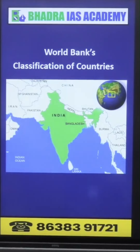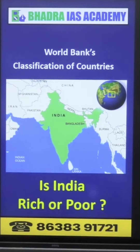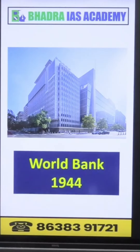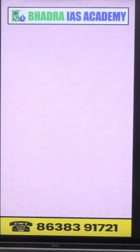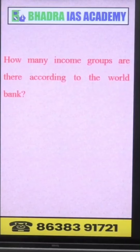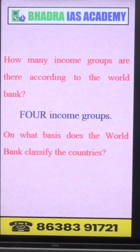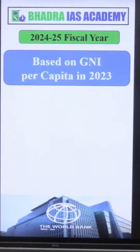So the World Bank classifies the countries into many groups — is India rich or poor? The World Bank, which was established in 1944, classifies the countries into four groups, on the basis of GNI per capita.